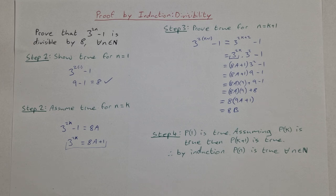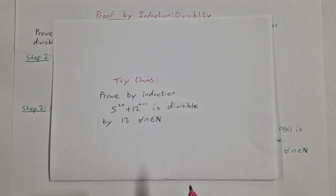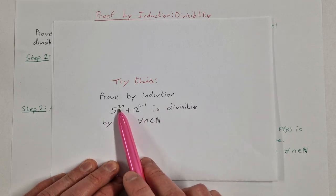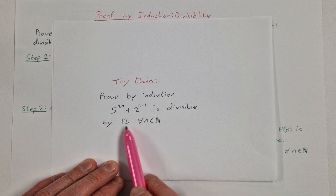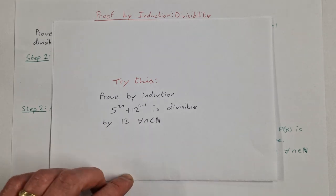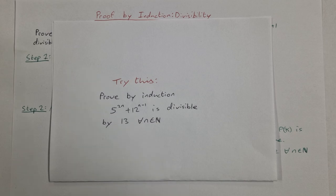So I want you to try this one now, see how you get on. It's quite similar. Prove by induction that 5 to the power of 2n plus 12 to the power of n minus 1 is divisible by 13 for all n element of N. Give that a go and let me know how you get on in the comments.